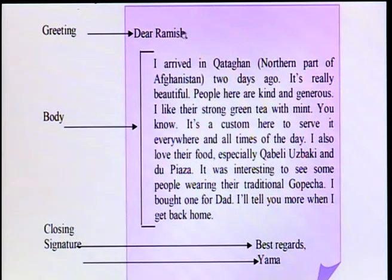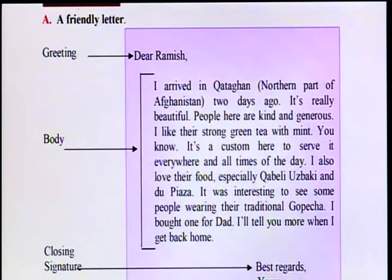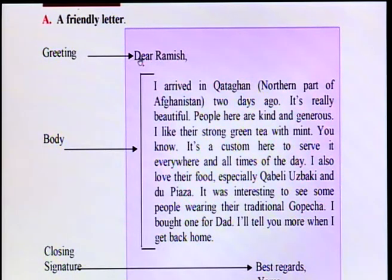I'm talking about the purple chart. You can see that this letter is started with a greeting. So this part is called greeting. At the end we have closing, and we have signature. In the greeting part, we can write 'Dear' and then our friend's name — like 'Dear Ramesh,' 'Dear Ahmed,' 'Dear Mariam,' 'Dear Mina.' After the greeting, we will have a comma.